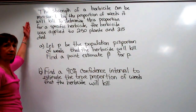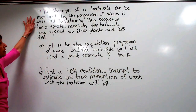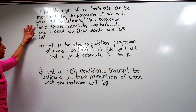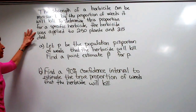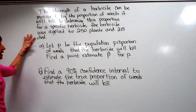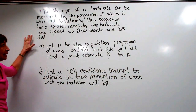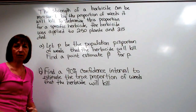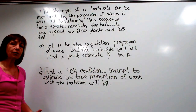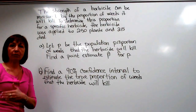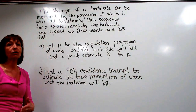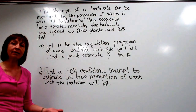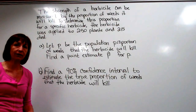Here's the setup of the question: the strength of an herbicide can be measured by the proportion of weeds it will kill. To determine this proportion for a specific herbicide, it was applied to 250 plants and 215 of them died. Reading the question helps us determine whether this is a probability question, a confidence interval question, a sample size question, or a hypothesis testing question.